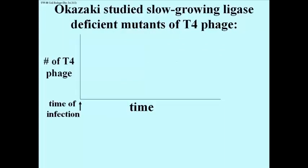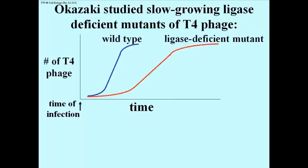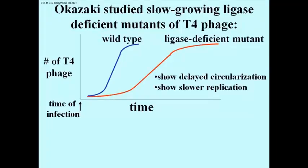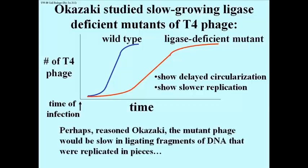Okazaki knew the role of DNA ligase in closing bacteriophage DNA circles, and he had isolated several mutant strains of the phage, called T4, that were deficient in making DNA ligase. These phage multiplied more slowly than wild type phage, as shown by the growth curves on this slide. Because the mutant phage were slow to close their DNA circles after infecting E. coli cells, replication of these mutant phage was also slower than in the wild type. But Okazaki also proposed that phage DNA replication itself might be using DNA ligase to stitch together fragments of DNA made discontinuously on the lagging template strand at replication forks, and that these mutants were doing this process slowly.